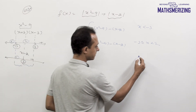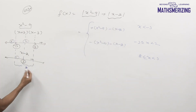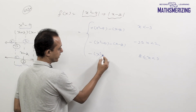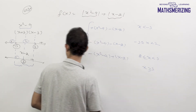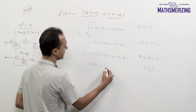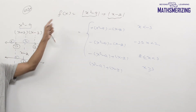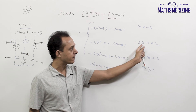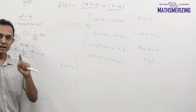The third interval is between 2 and 3. Here the first expression is still negative and the second is positive, so I write minus (x squared minus 9) and plus (x minus 2). Finally, when x is greater than 3, both are positive, so this is (x squared minus 9) plus (x minus 2). Since both modulus and polynomial functions are continuous, it doesn't matter where I place the equality sign at the boundary points.